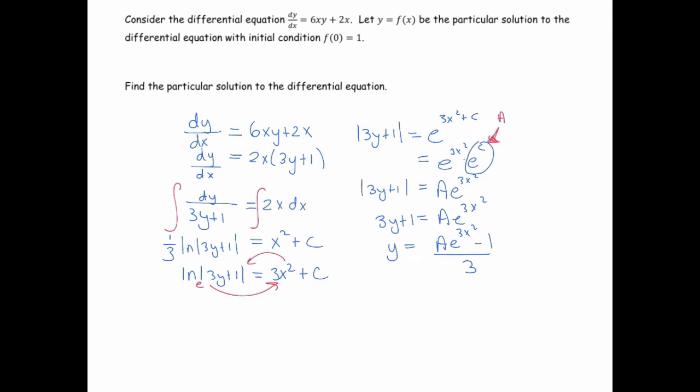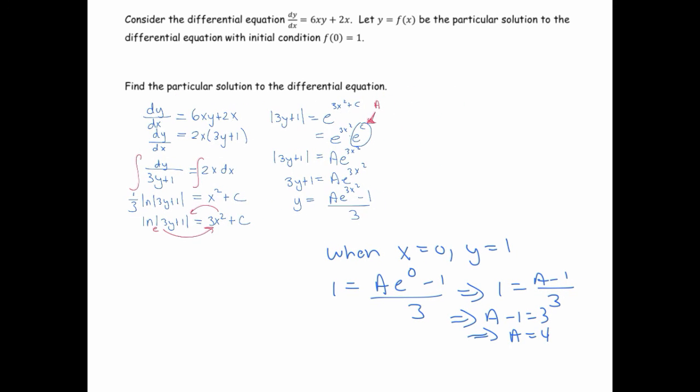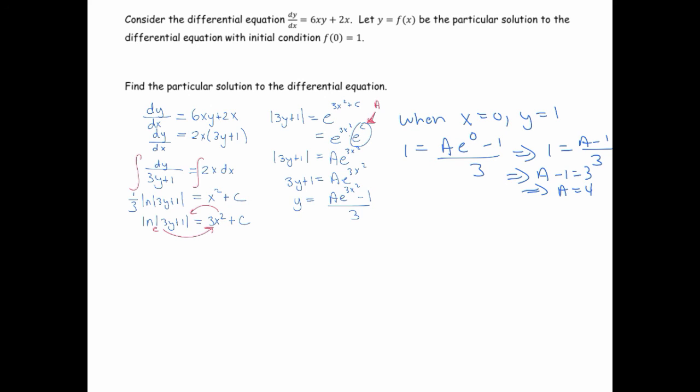Alright, so there's the general solution, and if I wanted my particular solution, I would just plug in my initial condition. So y is 1 when x is 0. So that's a e to the 0 minus 1 over 3. So that gives me a minus 1 over 3. 1 equals a minus 1 over 3, which means that a minus 1 equals 3, which means that a equals 4. So my particular solution would be y equals 4 e to the 3x squared minus 1 divided by 3. Alright, so there's two examples of ones that you would likely come across on an AP exam.